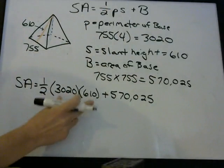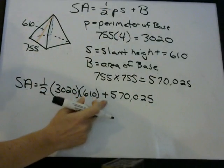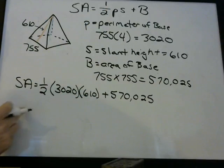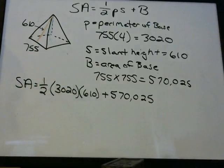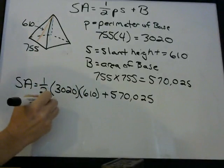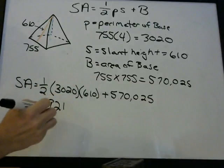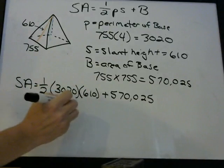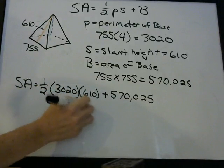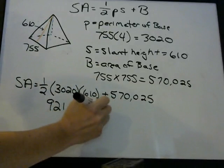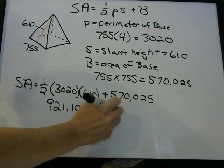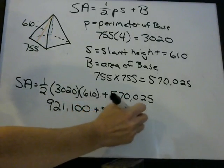Remember, you always have to do multiplication before you do addition — that's the order of operations. So one-half times 3,020 times 610 — plug that into your calculator — and you're going to get 921,100.